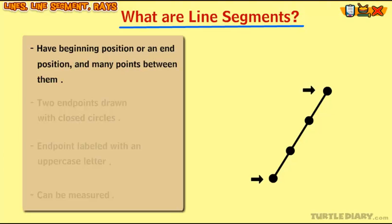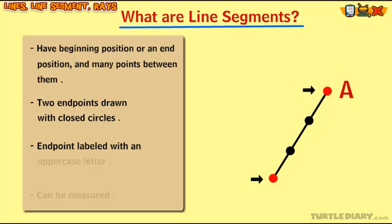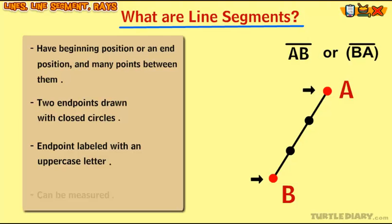Lines, on the other hand, are infinite. A line segment is drawn with two endpoints — closed circles — to show that it starts at one point and ends at another. Each endpoint is labeled with an uppercase letter. Line segments are represented as endpoints written together with a line on top, and will be read as line segment AB.